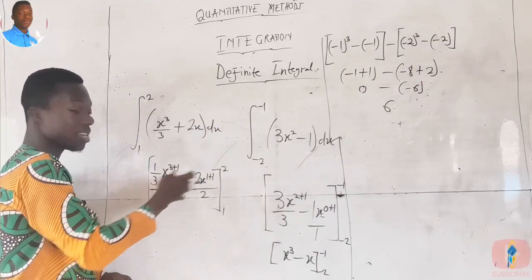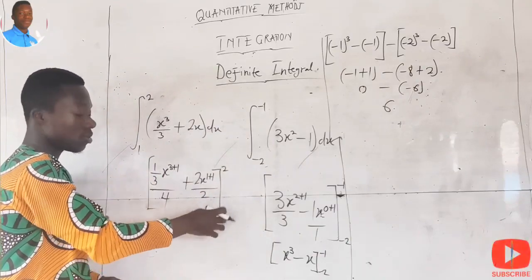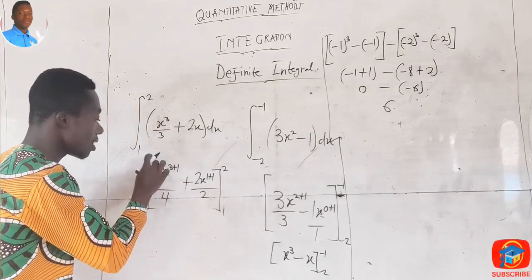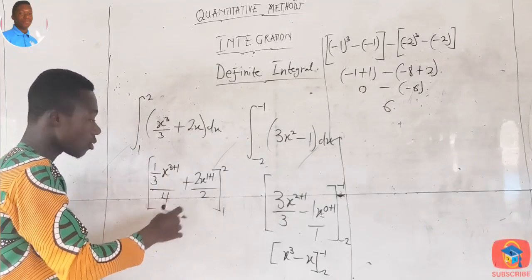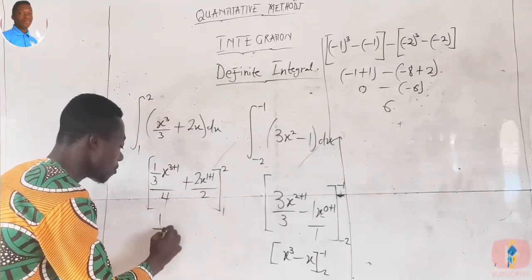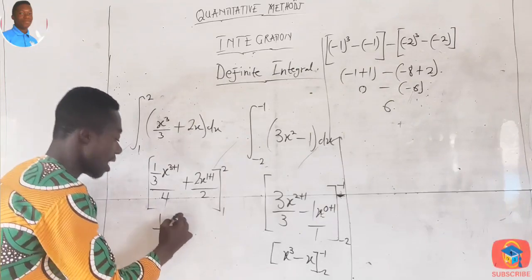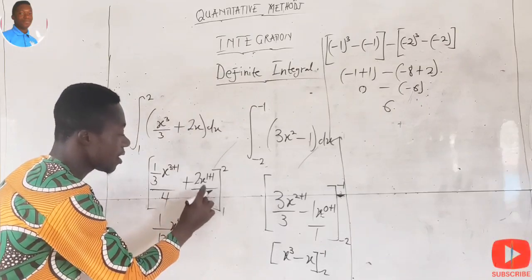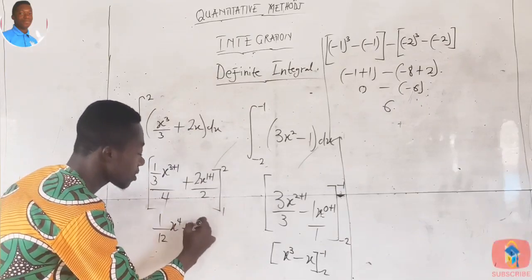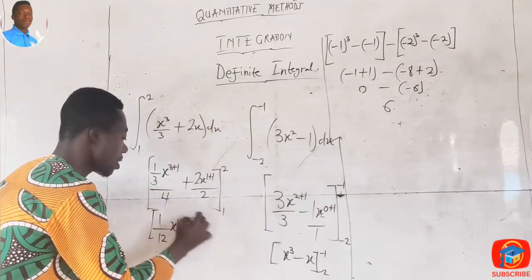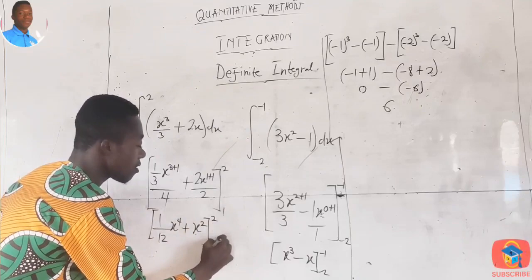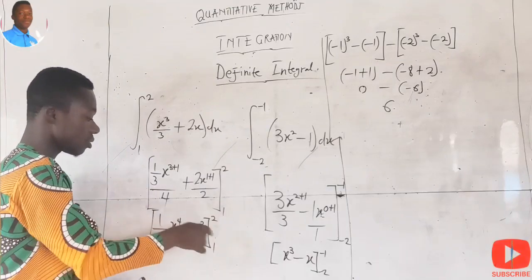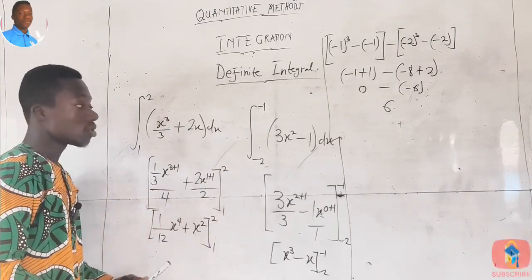So the integrated expression becomes [(1/12)x⁴ + x²], evaluated from one to two. We substitute two into this expression and subtract the result of substituting one into the same expression, taking the difference between the two. That gives us: [(1/12)(2)⁴ + (2)²] minus [(1/12)(1)⁴ + (1)²].